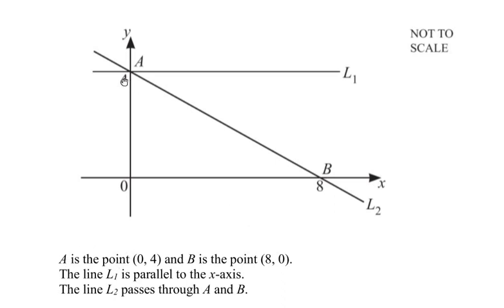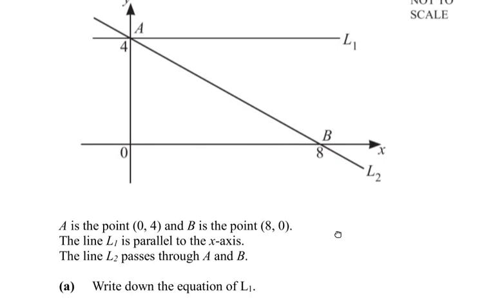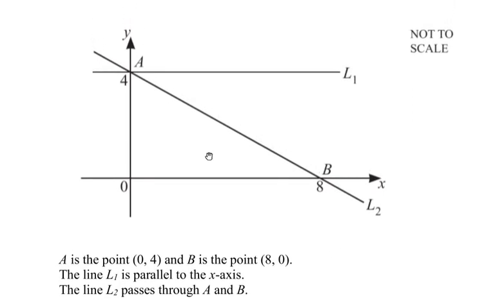A is the point (0,4) and B is the point (8,0). The line L1 is parallel to the x-axis and the line L2 passes through the points A and B. Now A is the point (0,4) which means A is on the y-axis, and B is lying on the x-axis at (8,0) as given in the question.